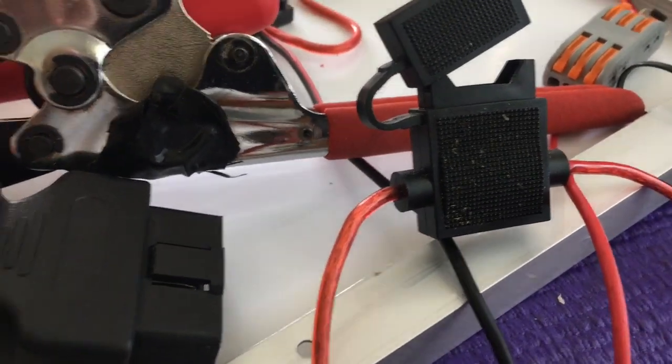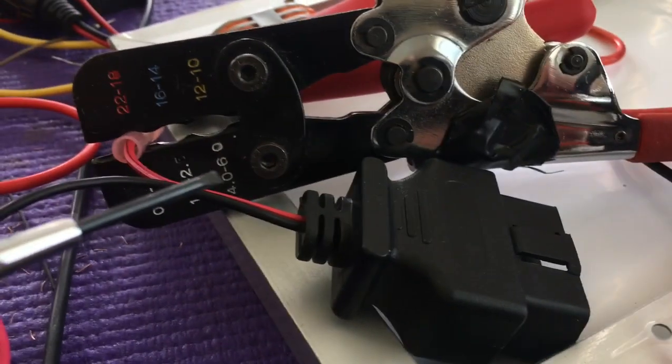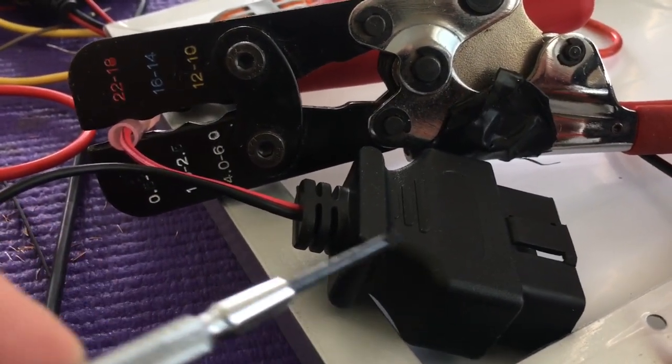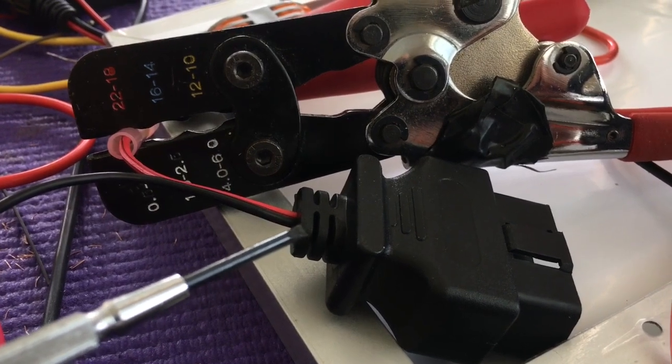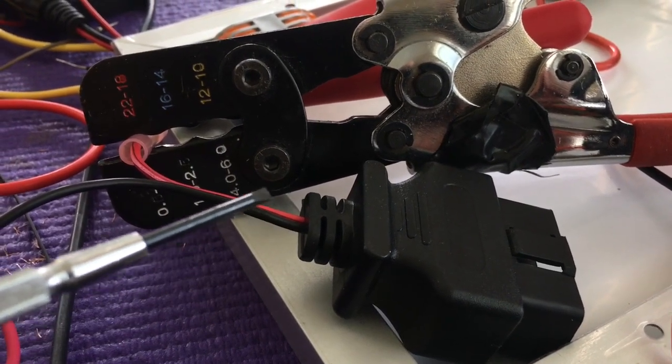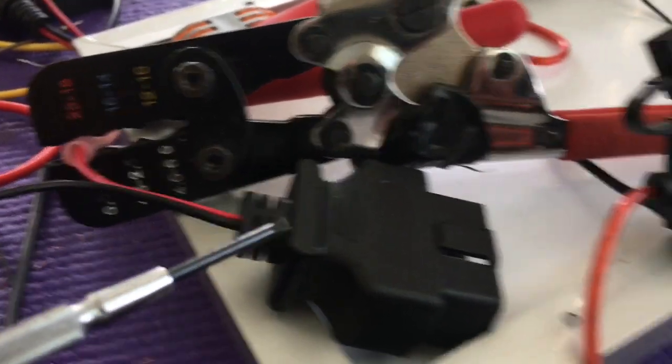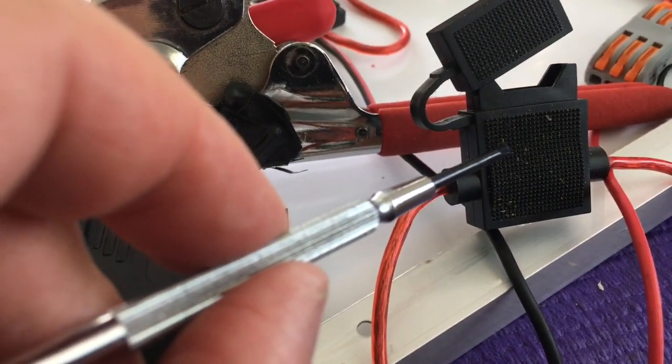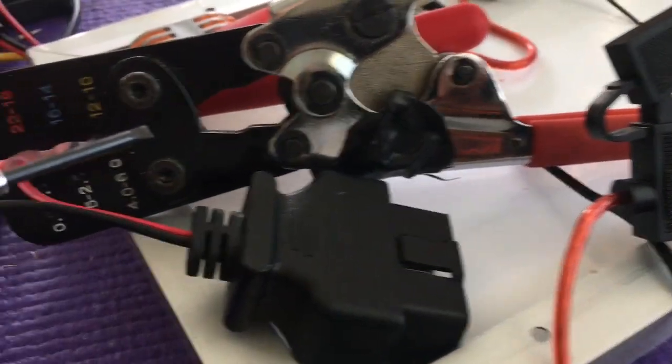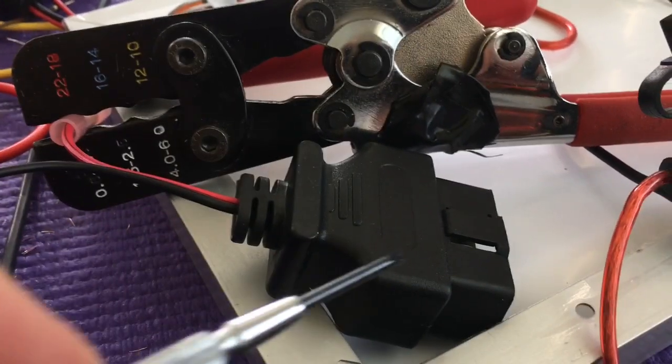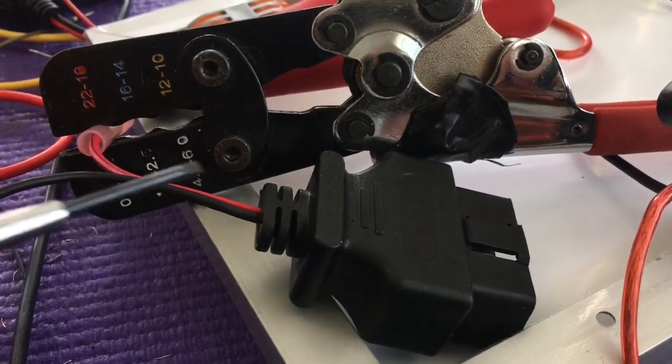They sell these on Amazon or AliExpress and you can get these. So the idea for fusing is to get as close to the battery as you can for your fuse. So what I'm going to do is put one of these fuses on in line to this connection.